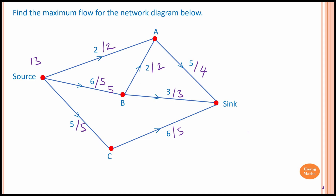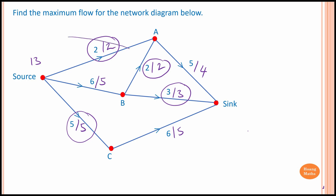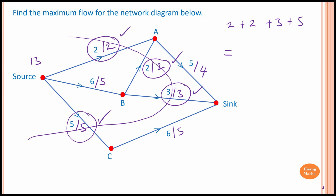Now we circle the edges at full capacity and cut through them to separate the source from the sink. The maximum value is obtained by adding the cut edges: 2 plus 2 plus 3 plus 5. That gives 2 plus 3 equals 5, plus 5 equals 10, plus 2 equals 12. Therefore, the maximum flow is 12 units.